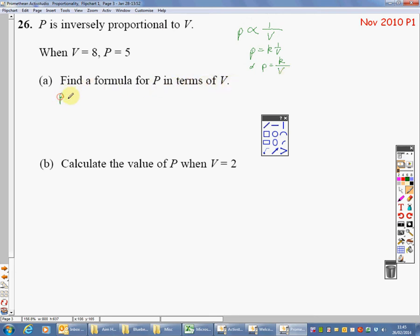Find a formula for P in terms of V. We already know that P equals K over V. We've been given two bits of information there and there. Put it into your equation. So P equals 5 equals K divided by 8. Can I find out what K is? Well, you can do it by balancing. We could say that K divided by 8 gives me 5, so 5 times by 8 will give me K, which is 40. So K equals 40. Don't just stop there because they want a formula. So P is now equal to 40 divided by V. Job done.